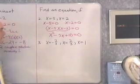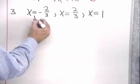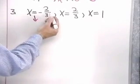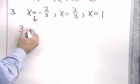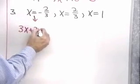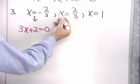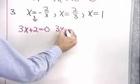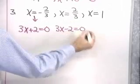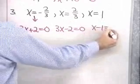Here's another problem. x equal negative 2 thirds, x equal 2 thirds, x equal 1. Well, if x is equal to negative 2 thirds, I'm going to multiply both sides by 3 and then I'm going to add 2 to both sides. So this means that 3x plus 2 is equal to 0. Here I'm going to multiply both sides by 3 and then I'm going to add negative 2 to both sides. I'll get 3x minus 2 is equal to 0. Here I'll just subtract 1 from each side and I get x minus 1 equals 0.